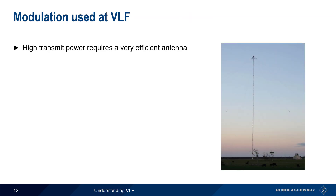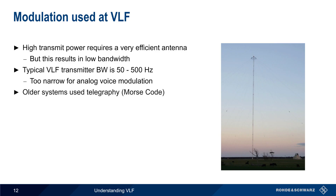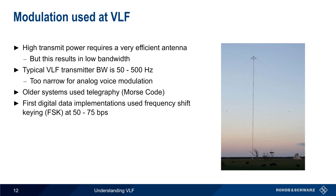High transmit powers generally require a very efficient antenna, but highly efficient antennas also usually have very low bandwidth. In the case of VLF transmitter systems such as the one we just looked at, the bandwidth is typically in the range of 50 to 500 hertz, which is much too narrow for the transmission of analog voice. Early VLF communication systems therefore initially used telegraphy, or Morse code, for sending messages, but later moved to digital data transmissions using FSK, or frequency shift keying, at bit rates of 50 to 75 bits per second.